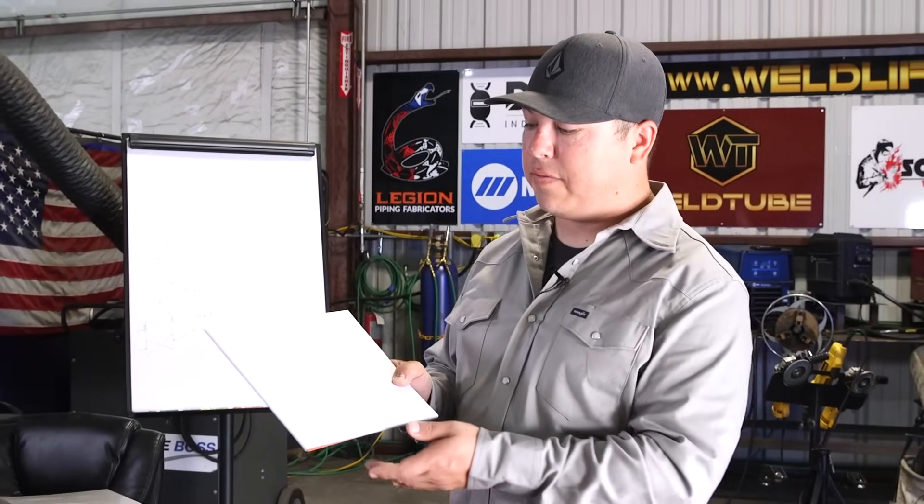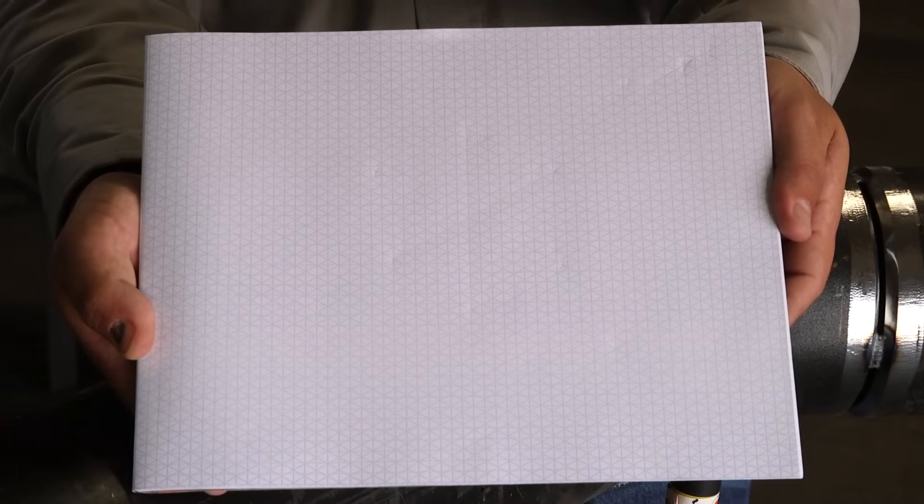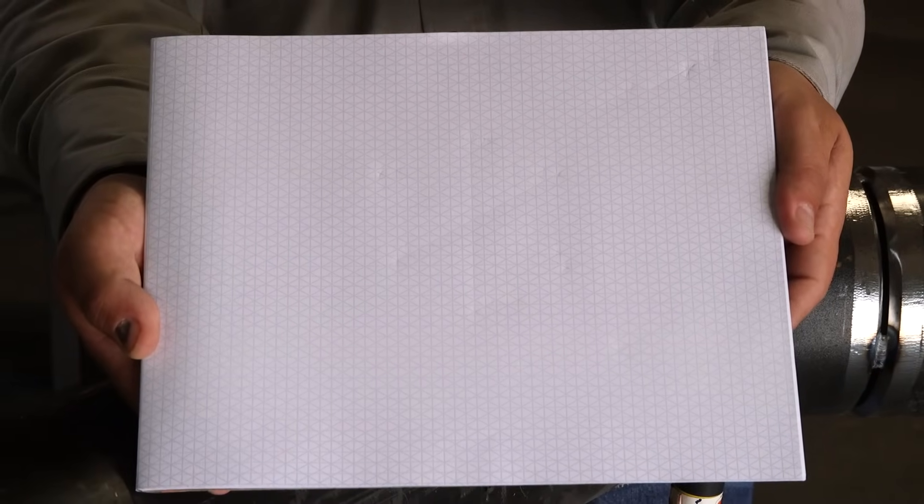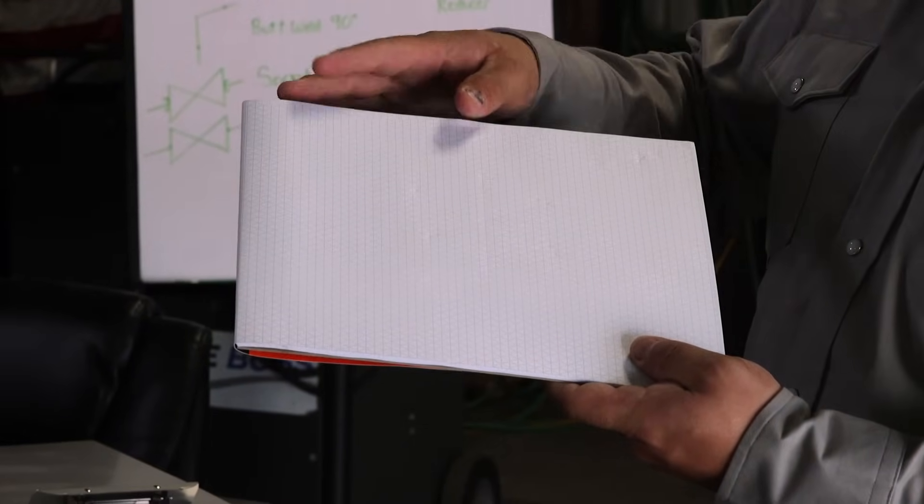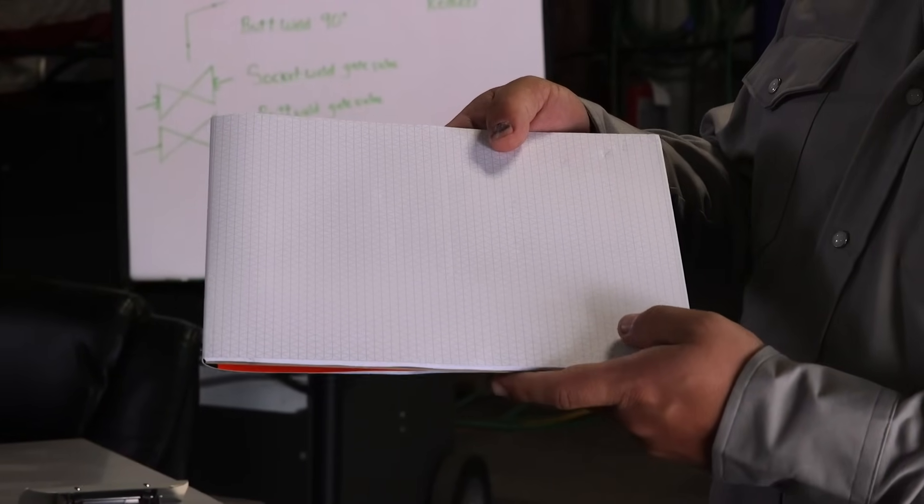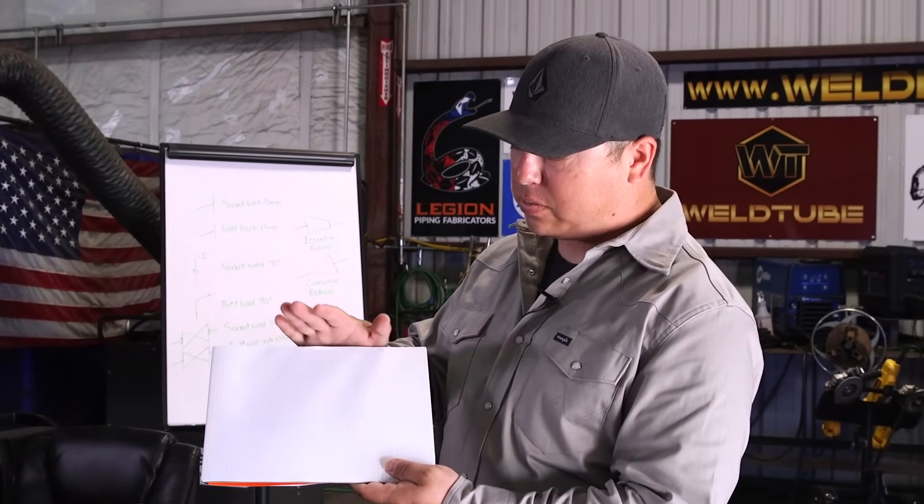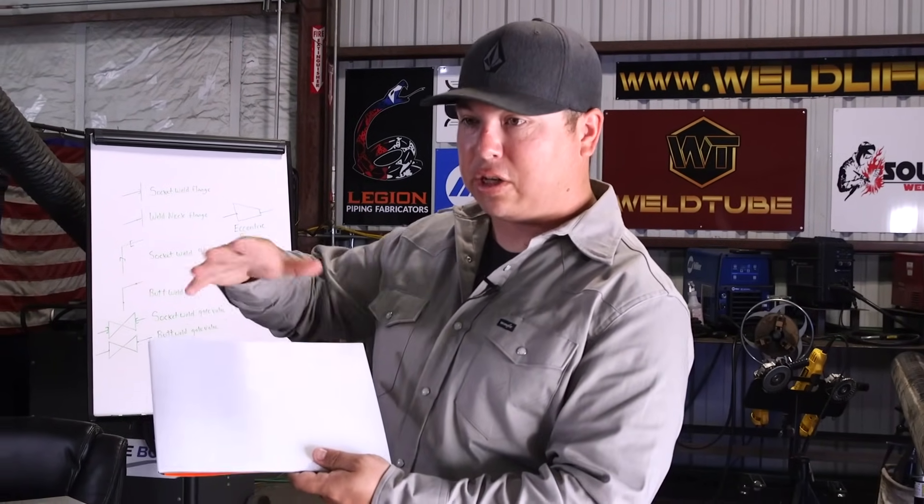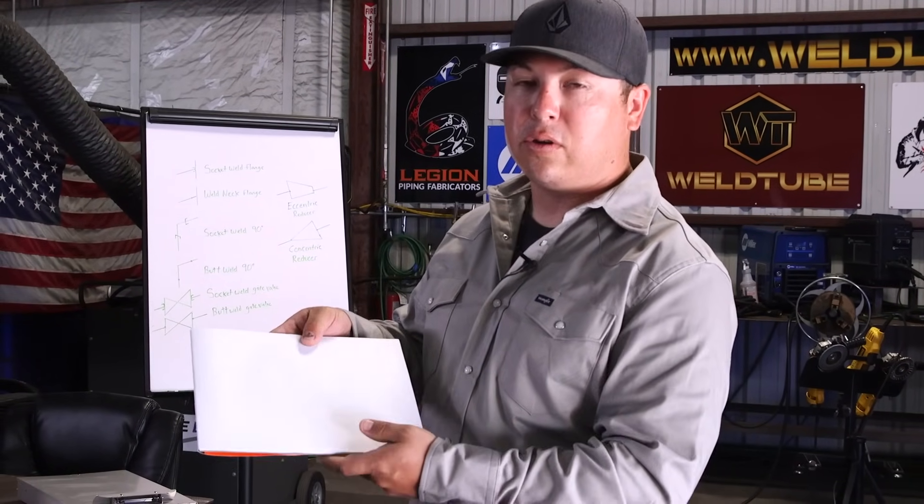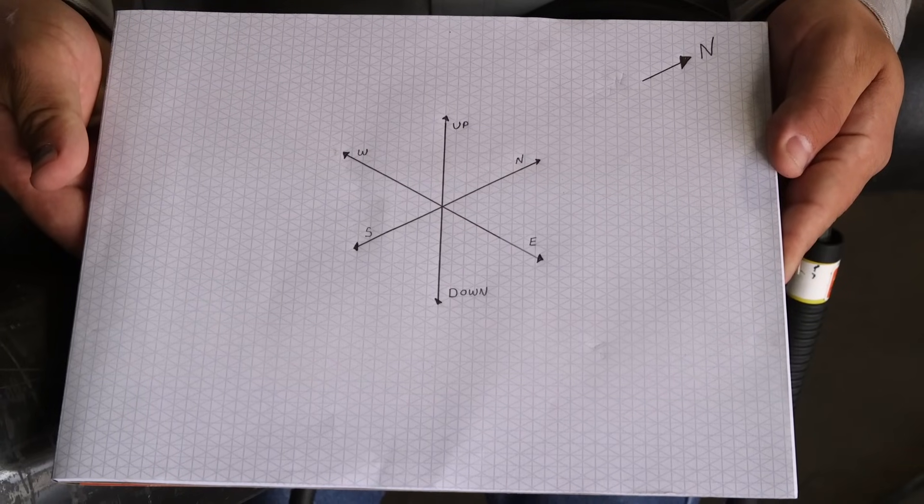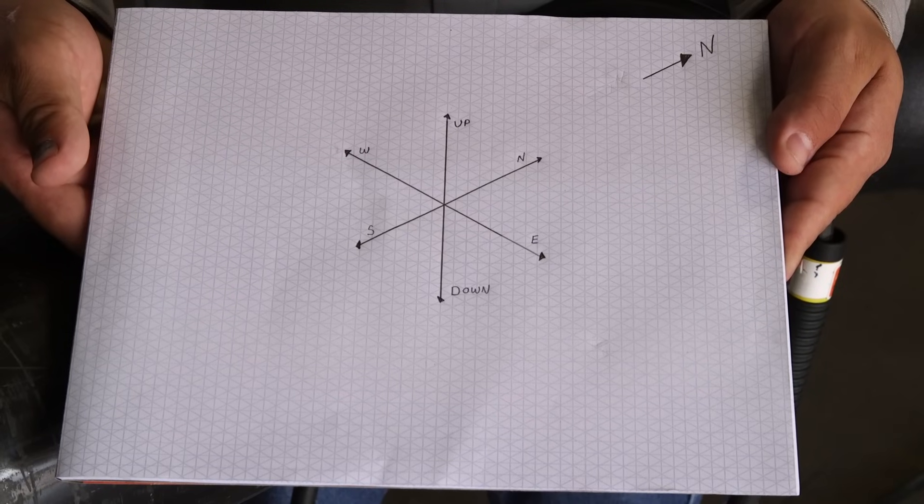So in front of me, I have a blank isometric sheet here. And at first glance, for anybody that's never seen this, it can be very confusing. You see a lot of lines, a lot of squares, and it's very hard to kind of orientate yourself on how it should be drawn. When you're actually drawing this ISO, it's not going to be a two-dimensional drawing. It's actually three-dimensional, and it can be rotated just depending on how you want to draw your piping.